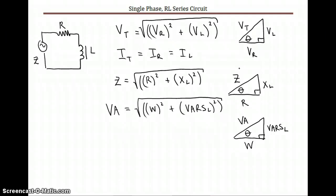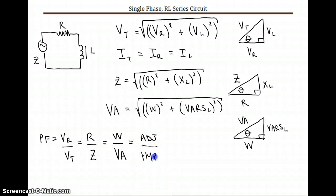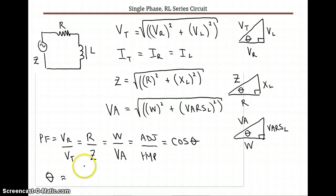For the power factor — the efficiency of the circuit — we can take VR over VT, resistance over impedance, or watts over VA. All of those are looking at the adjacent over the hypotenuse, which corresponds to cosine. So if we know the power factor and need to find the angle, we take the inverse cosine of any of those ratios.